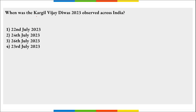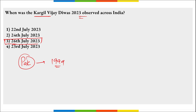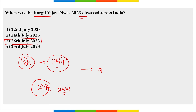When was Kargil Vijay Divas observed? Kargil Vijay Divas or Kargil Victory Day is observed across India on 26th of July to mark India's victory over Pakistan in the Kargil War of 1999. In 2023, it was the 24th anniversary of Kargil Vijay Divas. The operation during the war was Operation Vijay.